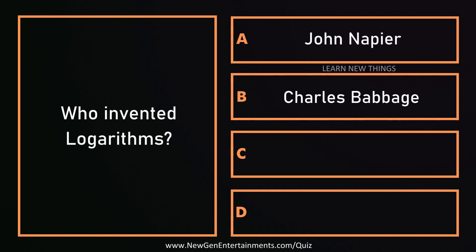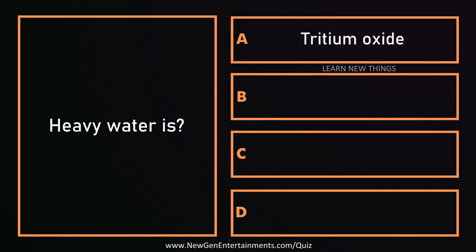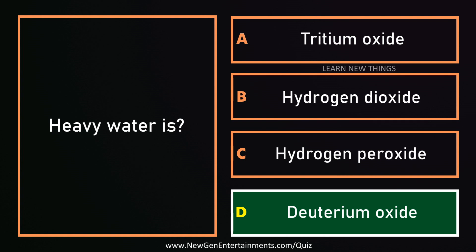Who invented logarithms? John Napier. What is heavy water? Deuterium oxide.